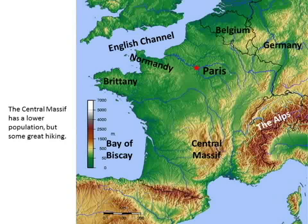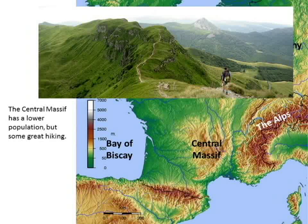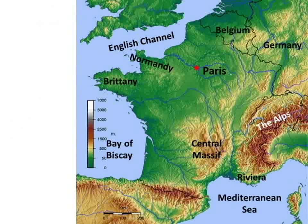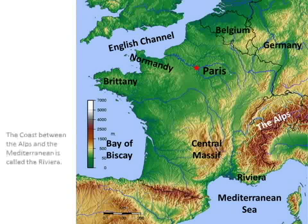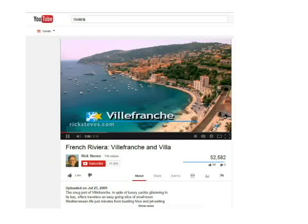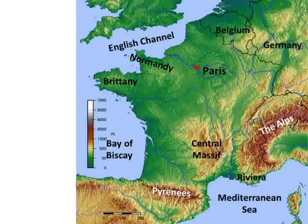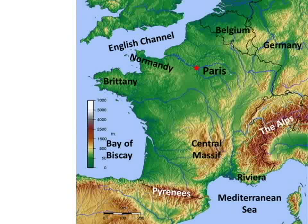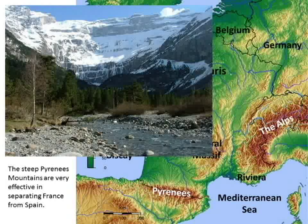The Central Massif has a lower population, but it has some great hiking and is known for outdoor activities. People who like the outdoors can head there. And finally, the Riviera, in the very south on the Mediterranean Sea. This is the coast between the Alps and the Mediterranean. It's known for its beaches, nightlife, and casinos. Separating France from Spain are the Pyrenees Mountains - very steep, although not as high as the Alps.